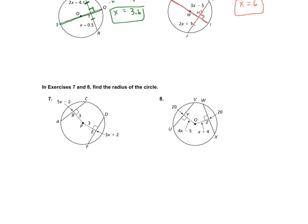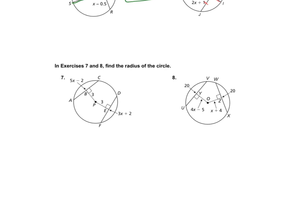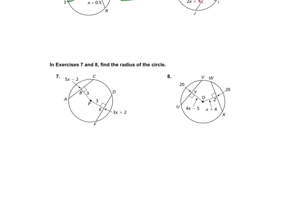Let's move on to number 7 and number 8 here. These are the last two. On number 7, we are given that this piece is 3 and that piece is 3, so those are congruent. If we have chords that are equidistant, the same distance from the center, then the chords themselves are congruent. So 5X minus 2 will equal 3X plus 2.